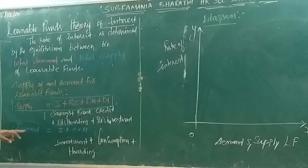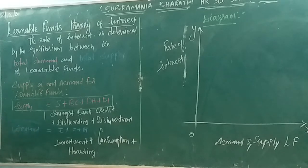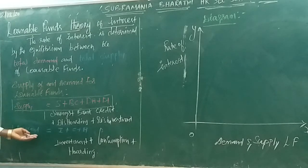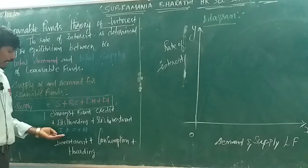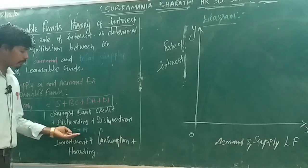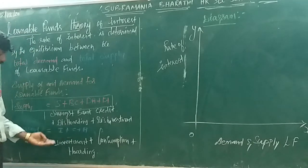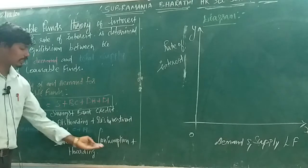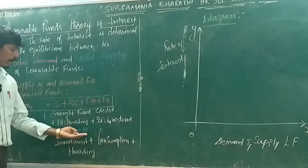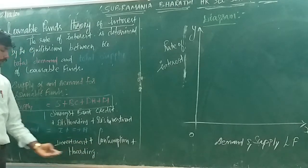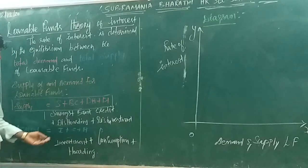Now, the demand for loanable funds. Demand equals I plus C plus H — where I means Investment, C means Consumption, and H means Hoarding.